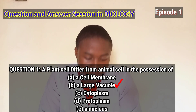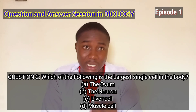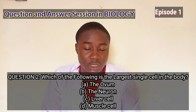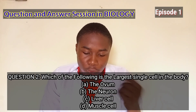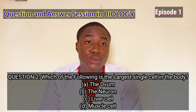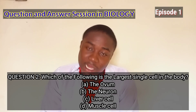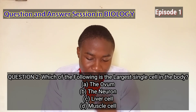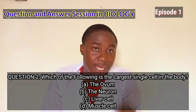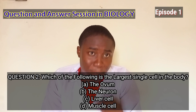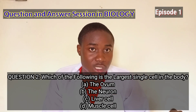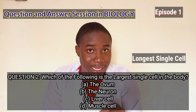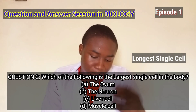Let's proceed to the second question: which of the following is the largest single cell in the body? Option A is the ovum; option B is the neuron; option C is the liver cells; and option D is the muscle cell. The largest single cell in the body is the ovum — the ovum is the same as the egg — so the answer is option A. Note that the neuron is not the largest single cell, but rather it is the longest single cell of the body.